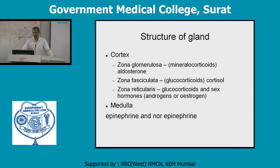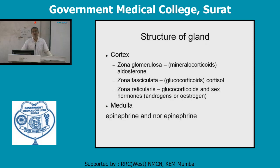Aldosterone helps in reabsorption of sodium from the distal convoluted tubule through exchange with hydrogen and potassium ions. Cortisol decreases immune reaction, determines lymphocyte population, is anti-allergic, decreases formation of fibrocytes, and reduces antigen-antibody reactions. The sex hormones from zona reticularis — androgens and estrogens — play a major role in the development of secondary sexual characters.